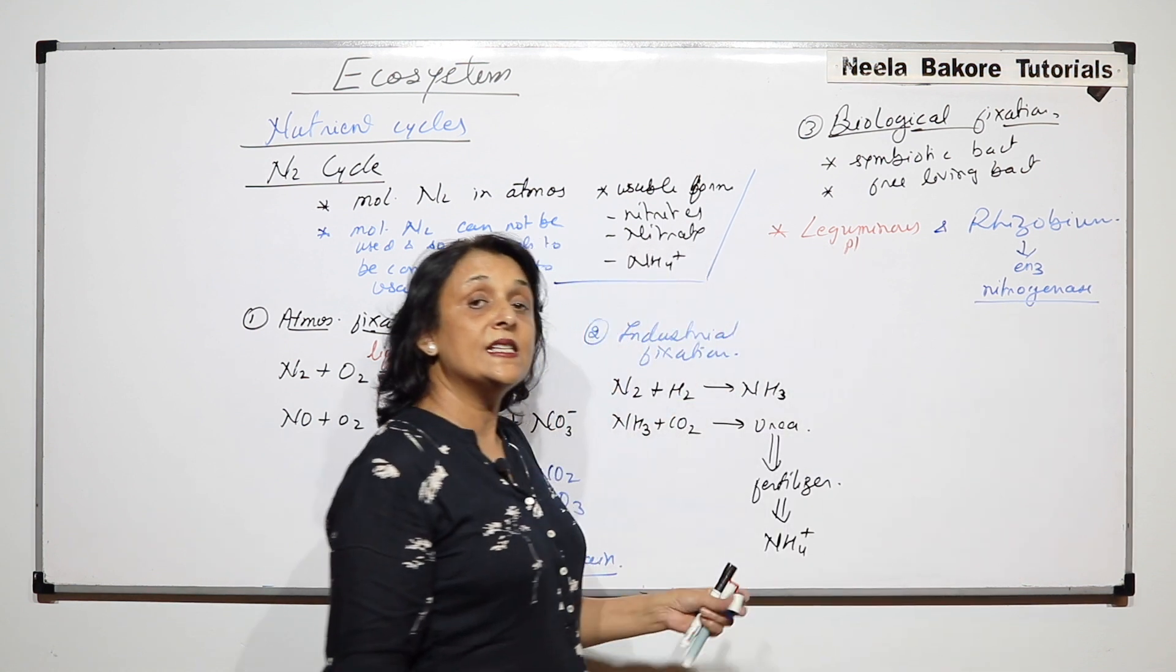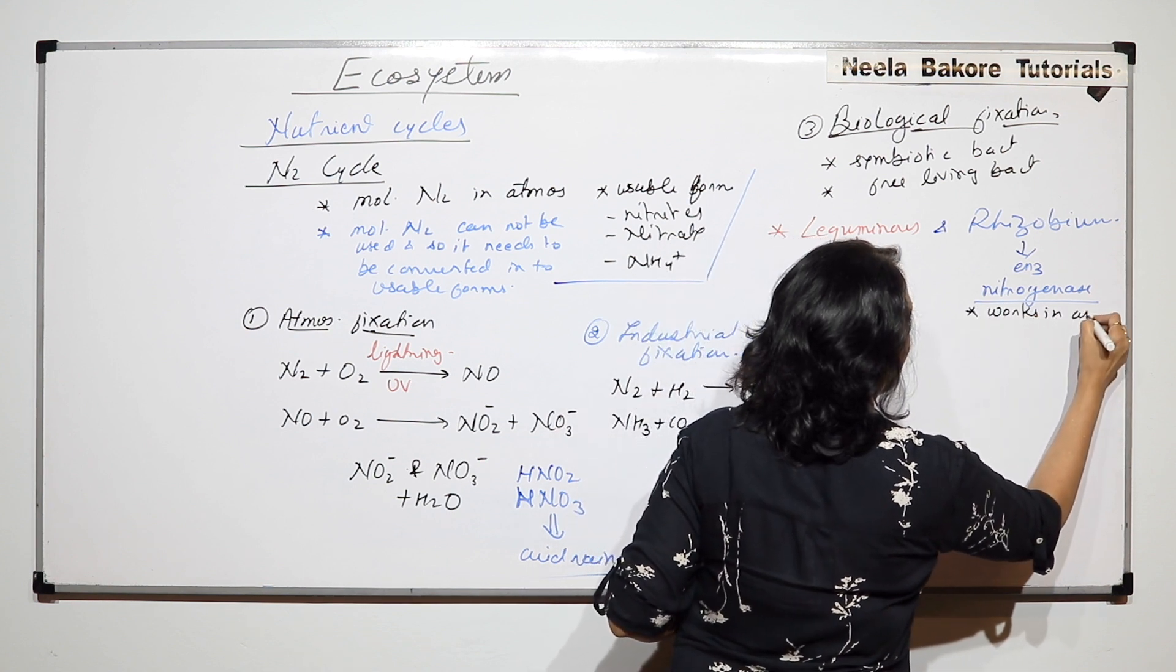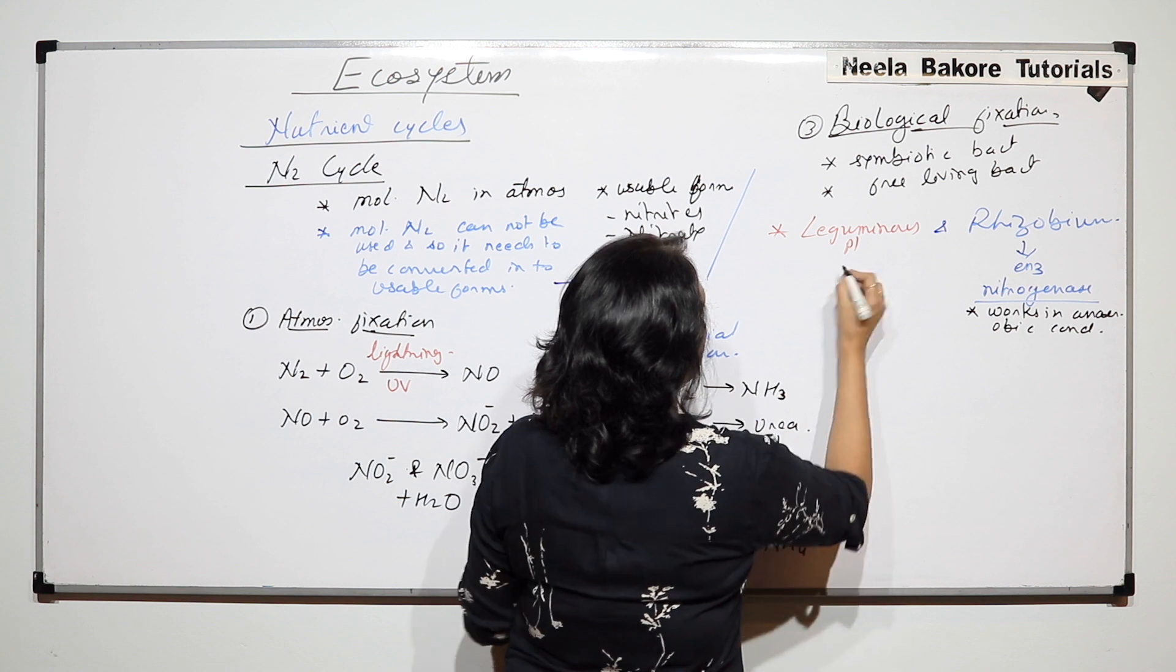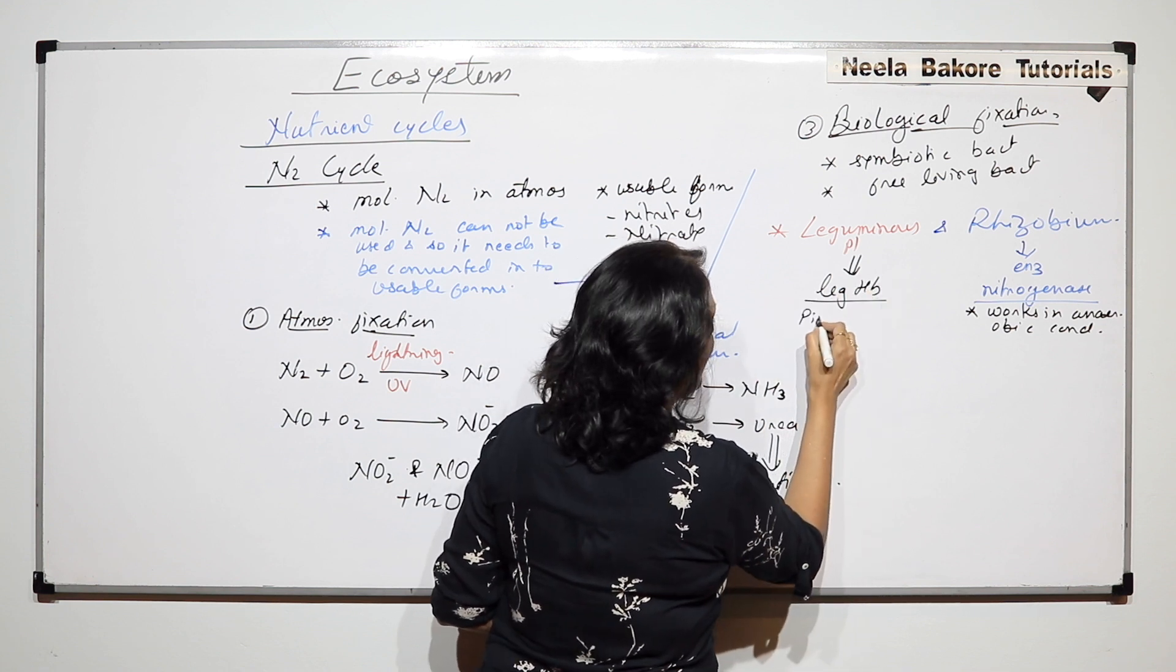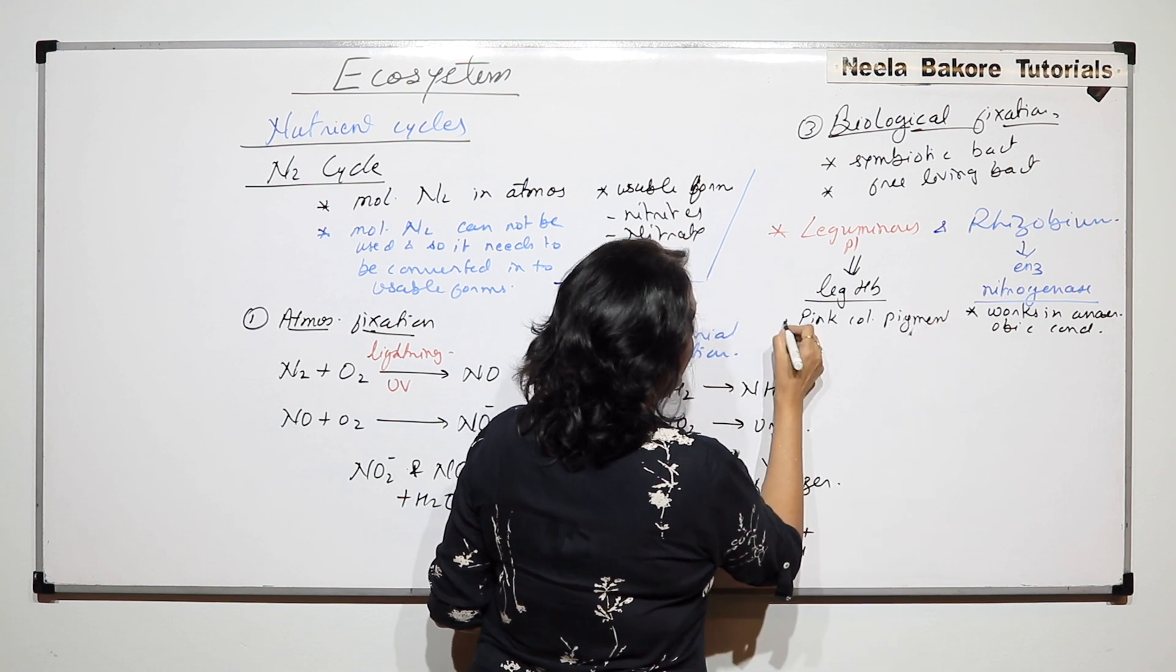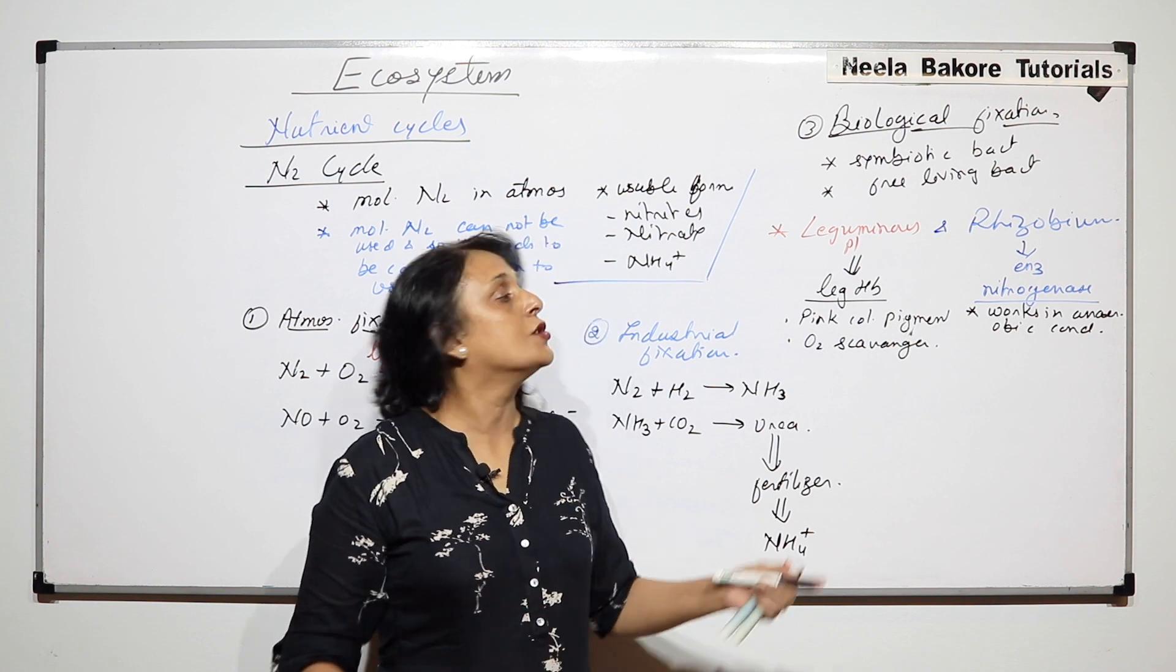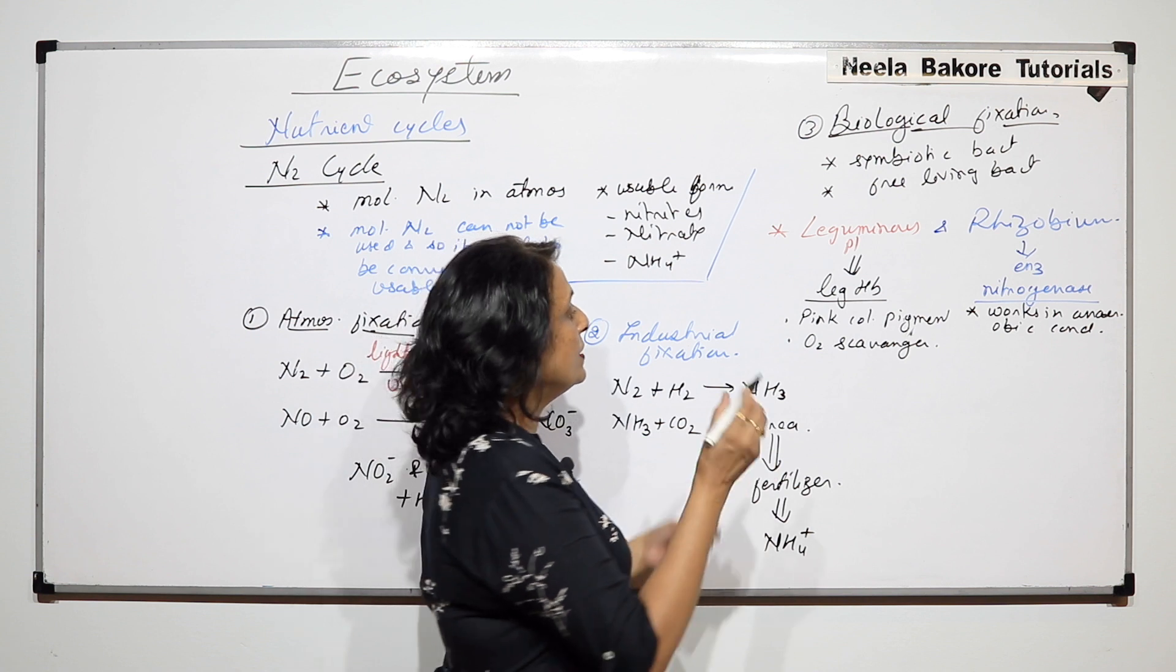Out of these two symbiotic is very important. So we have heard of a symbiotic association of rhizobium and leguminous plant. Rhizobium has an enzyme nitrogenase. This is the enzyme. This enzyme works only in anaerobic condition. Now how is this anaerobic condition achieved? That is achieved with the help of a pigment which is found in leguminous plant and that is known as leghemoglobin. It is a pink colored pigment. And this pigment acts as oxygen scavenger.